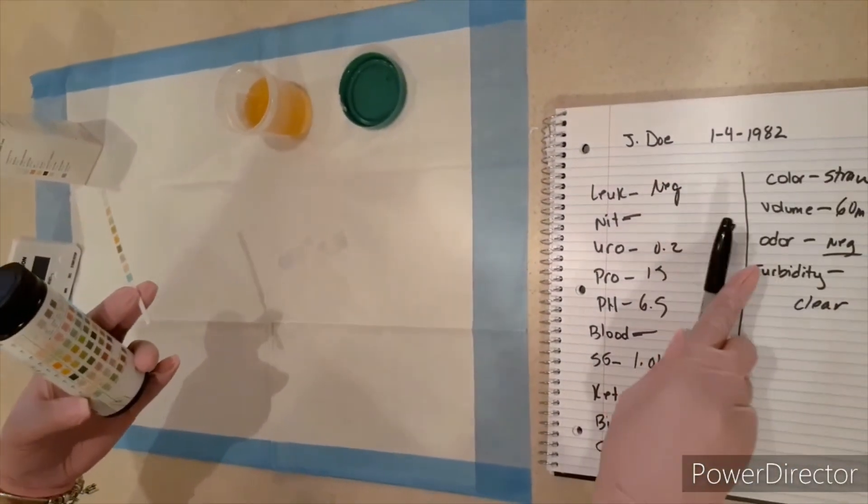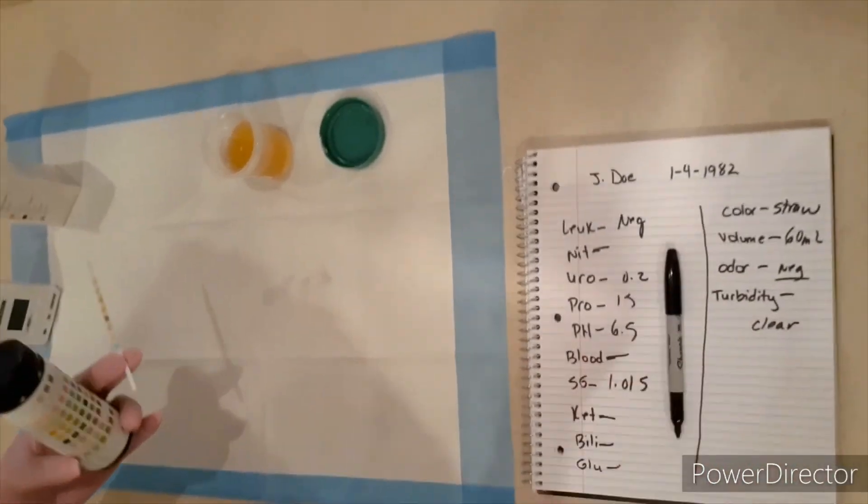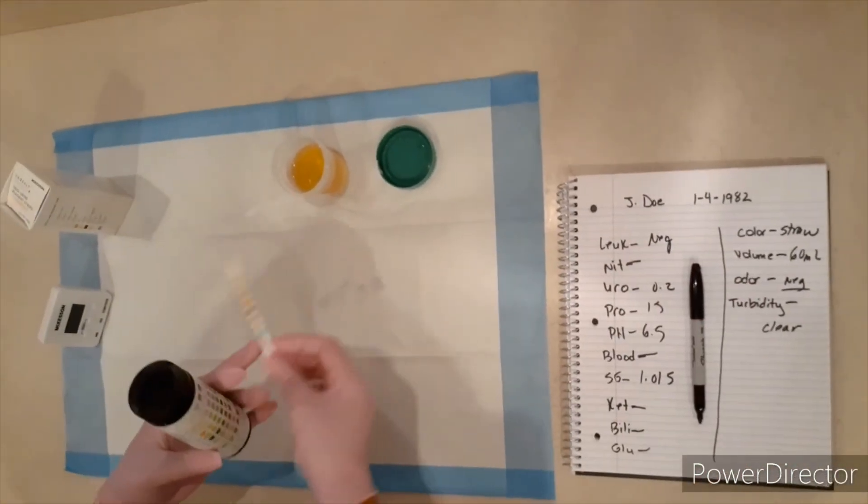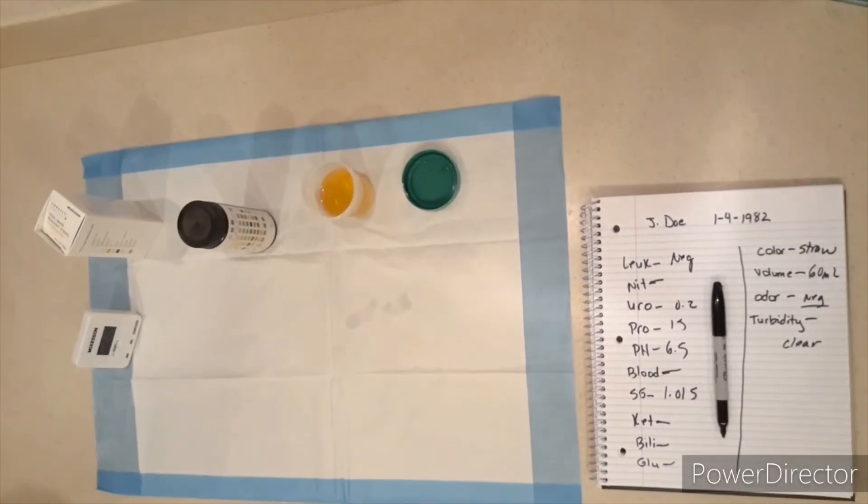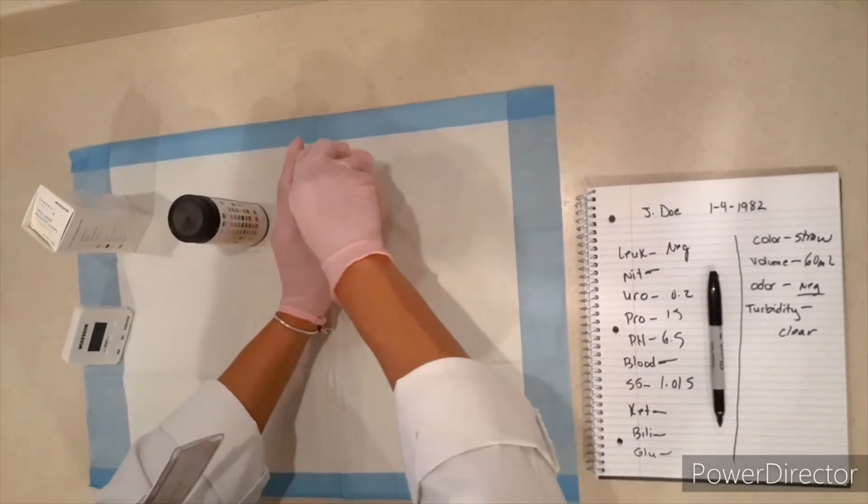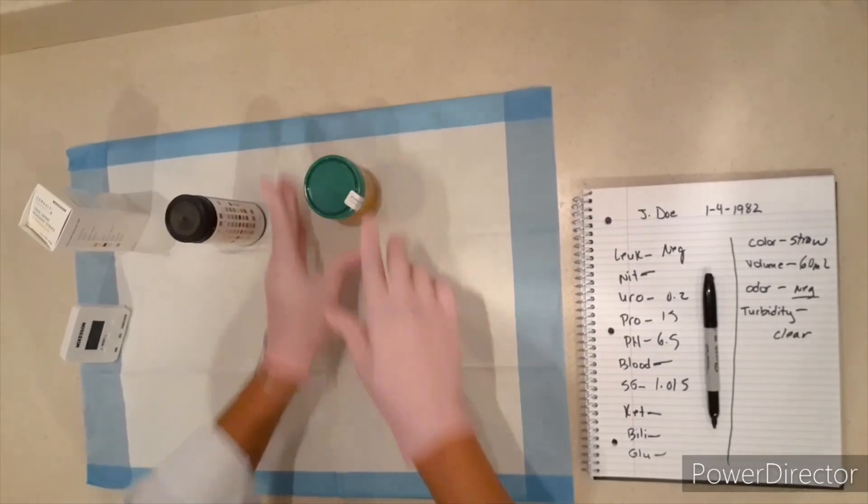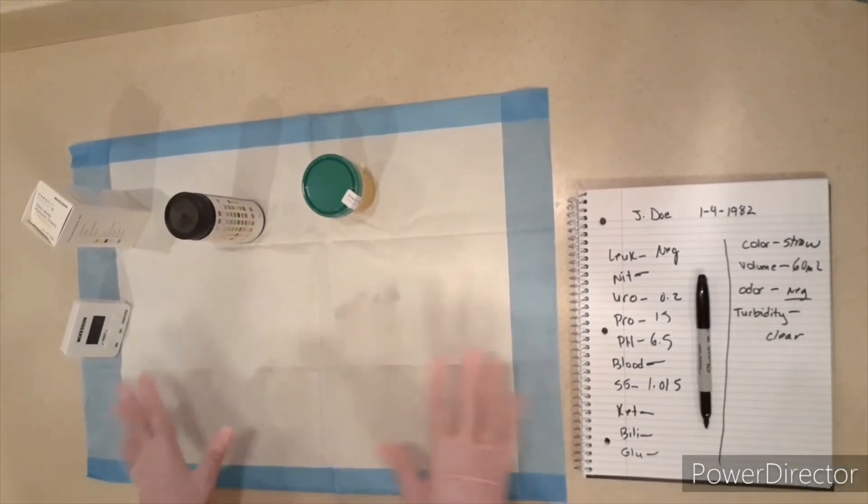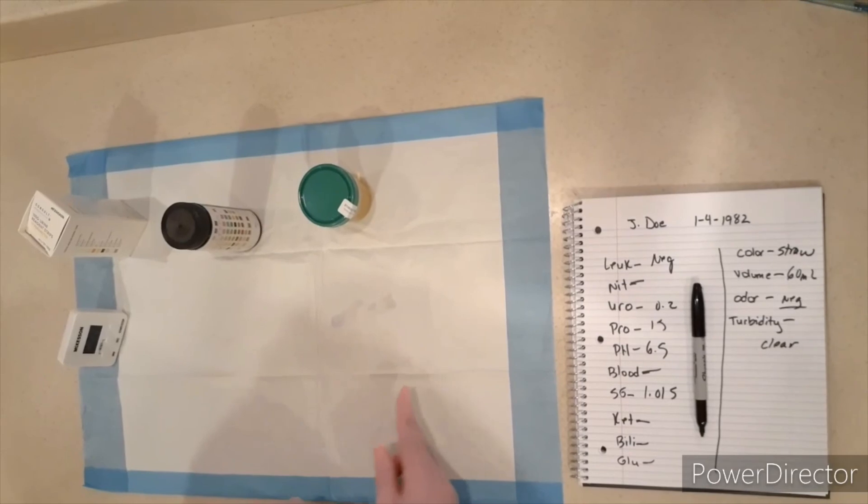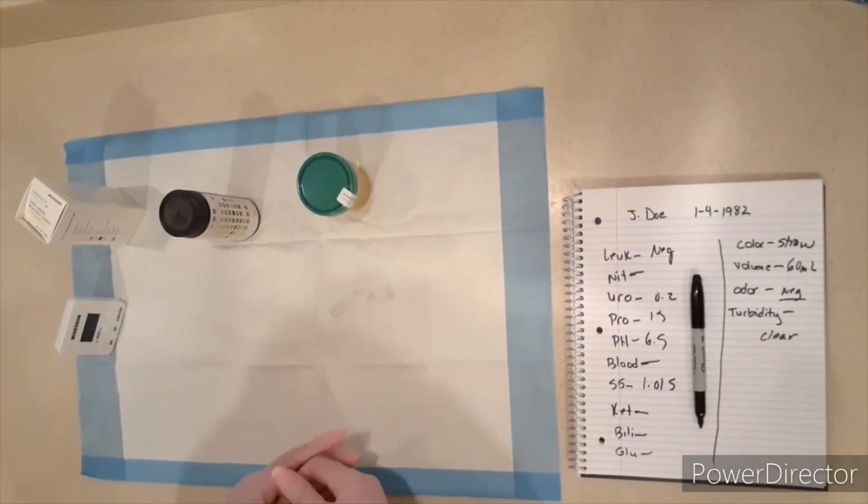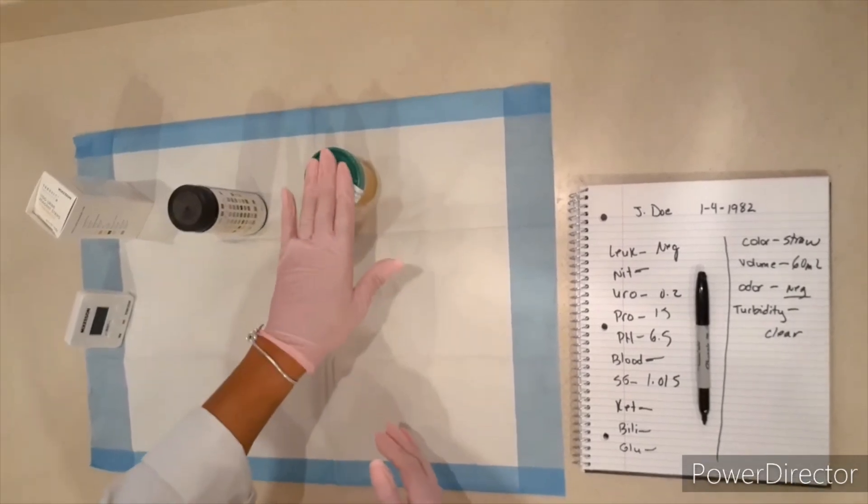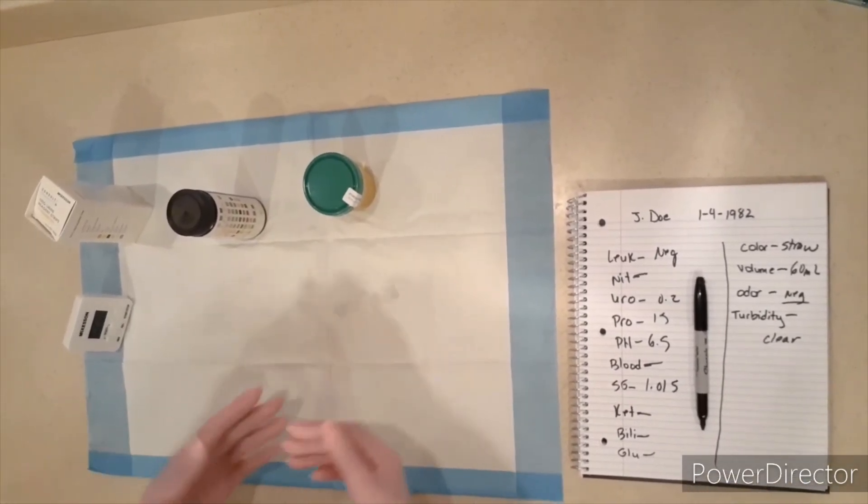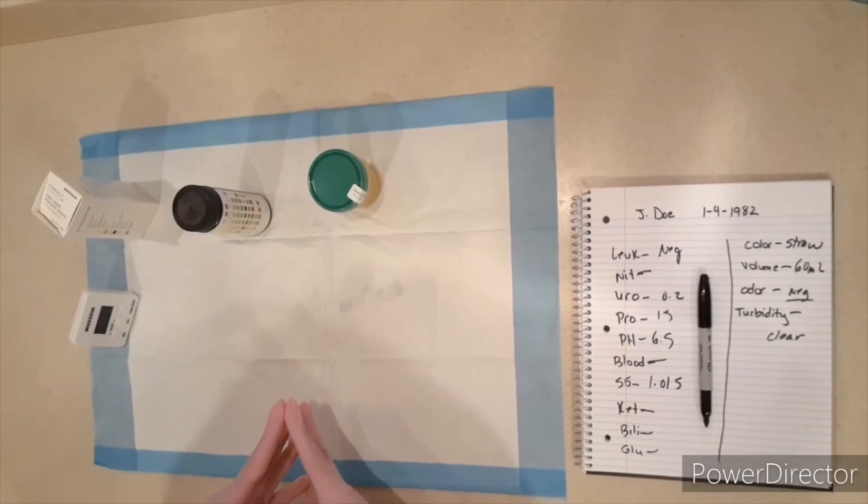All right. So I will make sure that I keep my pen here. I will discard this reagent strip in biohazard. Go ahead and recap my urine. We'll do our sanitation and disinfection of our area as well as a good hand washing. And then we'll transfer our documentation over to the patient's chart. And also please make sure that you keep your sample until the patient has left the office in case the physician wants to come back and take a look on their own.